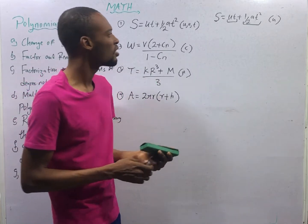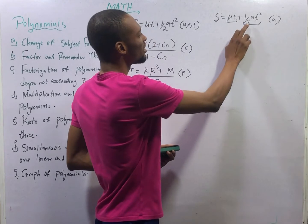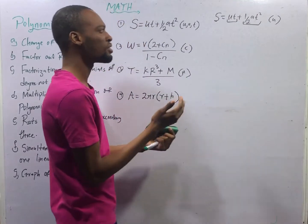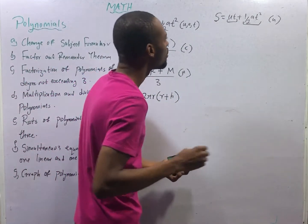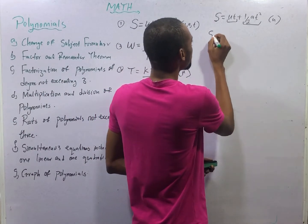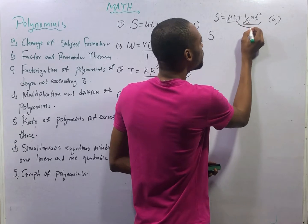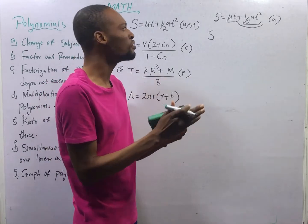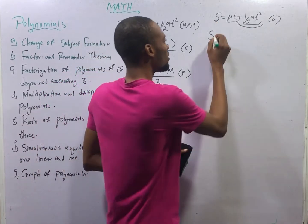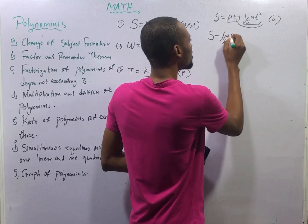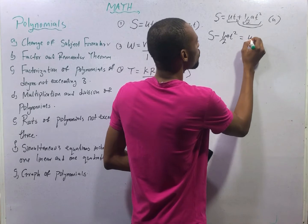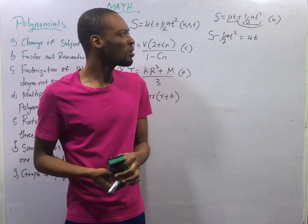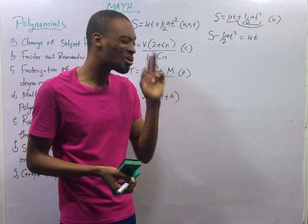Since we are making U the subject formula, the half AT squared term is irrelevant to us. We need to clear the air — remove every rubbish so that what we need remains. So we collect like terms: S minus half AT squared equals UT. As they move, UT remains. But wait — we are not looking for UT, we are looking for U.